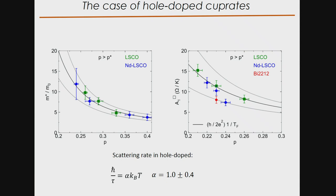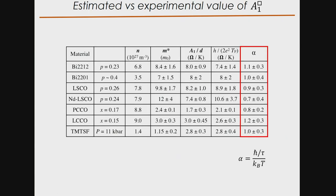Here is a table with all the numbers, which you can find in our paper submitted to arXiv. Basically, in all families shown, the α parameter is 1 ± 40%, meaning Planckian dissipation seems to be obeyed whenever T-linear resistivity is observed at low temperature.